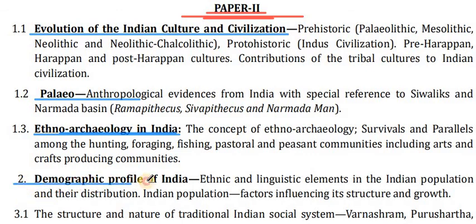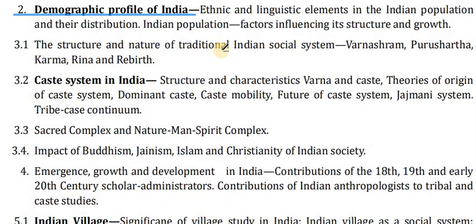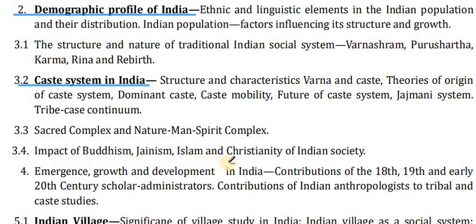Point 2 covers the demographic profile of India: ethnic and linguistic elements in the Indian population and their distribution, and factors in the structure and growth of Indian population. Point 3 covers the structure and nature of the traditional Indian social system: varna, ashrama, purushartha, karma, rina and dharma. The caste system in India — structure and characteristics, varna and jati, theories of origin of the caste system, dominant caste, caste mobility and the future of caste. Jajmani system, tribe-caste continuum, sacred complex, nature-man-spirit complex, and impact of Buddhism, Jainism, Islam and Christianity on Indian society.